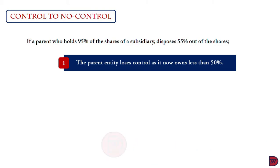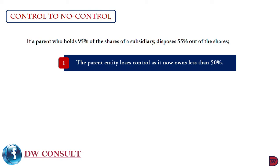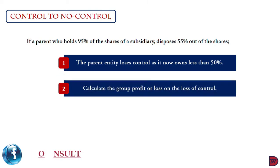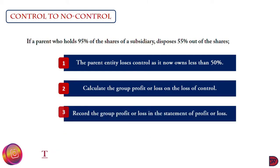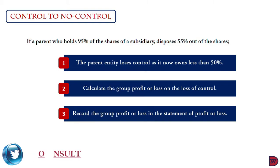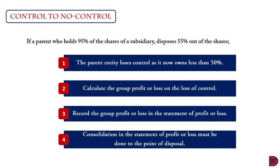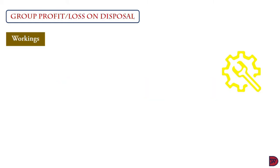This is less than the 50% or more threshold for a subsidiary to exist. There will be the need to calculate group profit or loss on the sale which led to the loss of control. The group profit or loss calculated must be recorded in the statement of profit or loss. Consolidation in the statement of profit or loss must be done up to the point of the disposal.